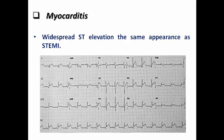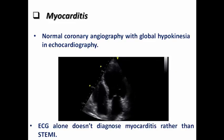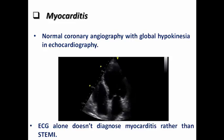In myocarditis — which has various causes, most commonly viral or sometimes autoimmune — the widespread ST elevation can appear identical to STEMI, making ECG differentiation very difficult. A key clue is that the ST elevation does not follow a specific vascular territory such as LAD, LCX, or RCA, since it represents myocardial inflammation rather than infarction. The patient may present with chest pain and dyspnea and may require coronary angiography to exclude STEMI. Echocardiography would show impaired LV function with normal coronary angiography, and wall motion abnormalities are typically global rather than segmental unless there is patchy infection. ECG alone cannot diagnose myocarditis.